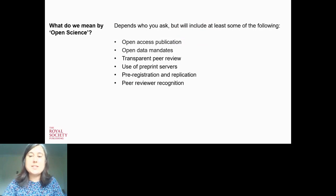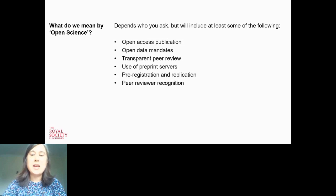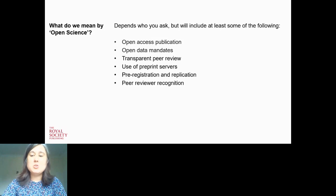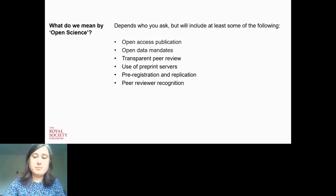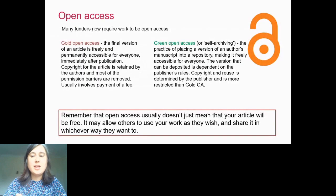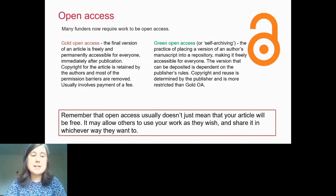Open science advocates hope that opening up science will improve the quality of research and its ability to be replicated. Innovations such as preprint servers are ways to speed up research, so not only does better research get to those who need it, but it gets there more rapidly. Now I'm going to go over some of the models of open access.